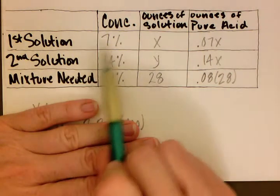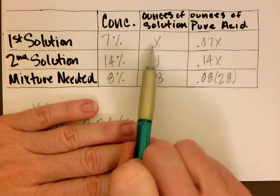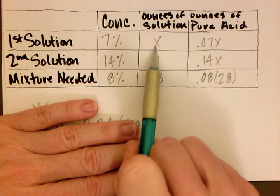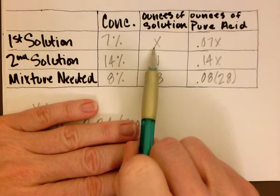So we have a first solution with a 7% concentration. We don't know the number of ounces, that's what we're going to solve for. So we are going to assign that our x variable.